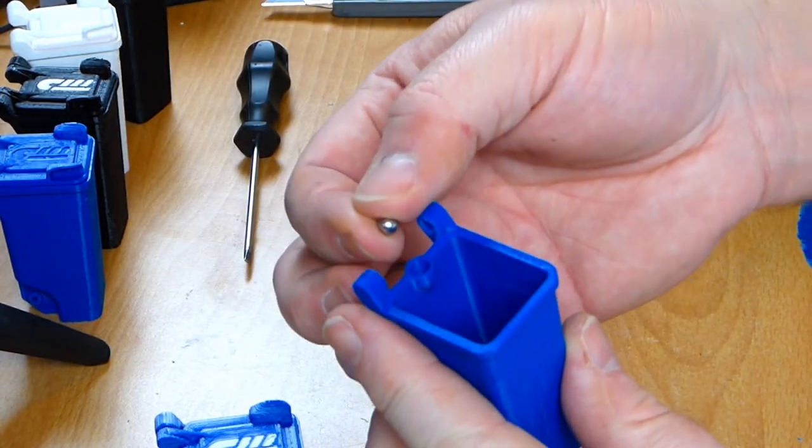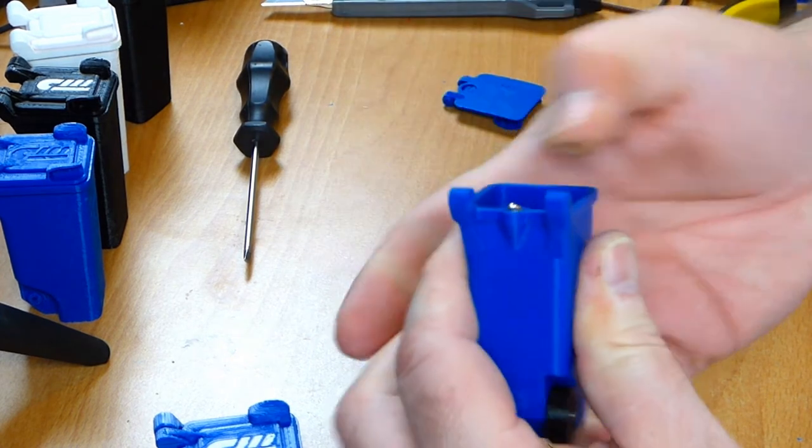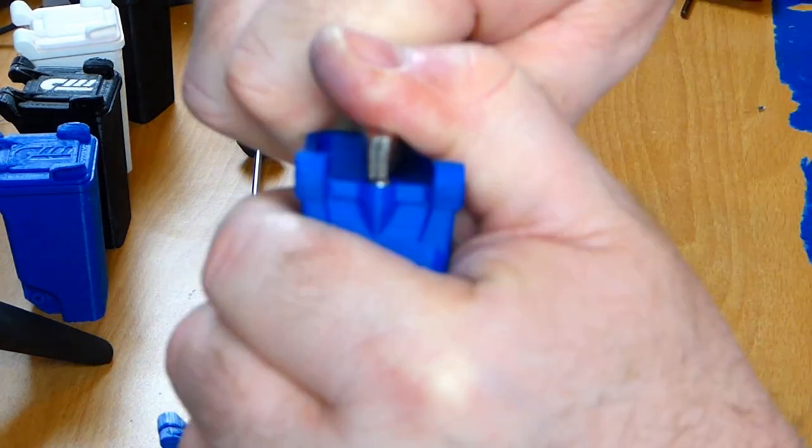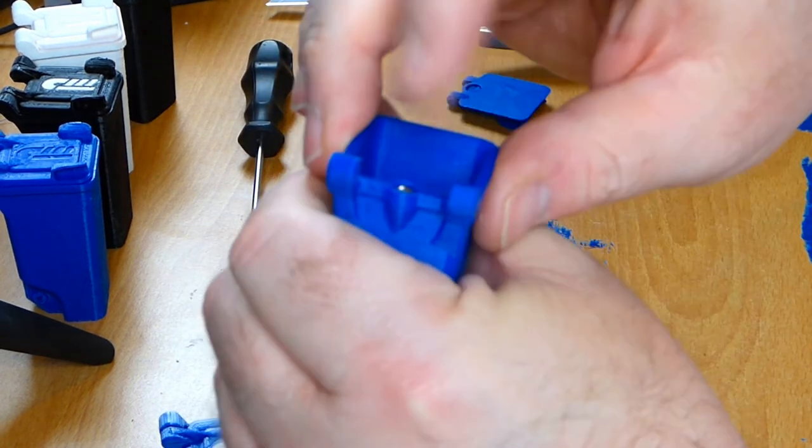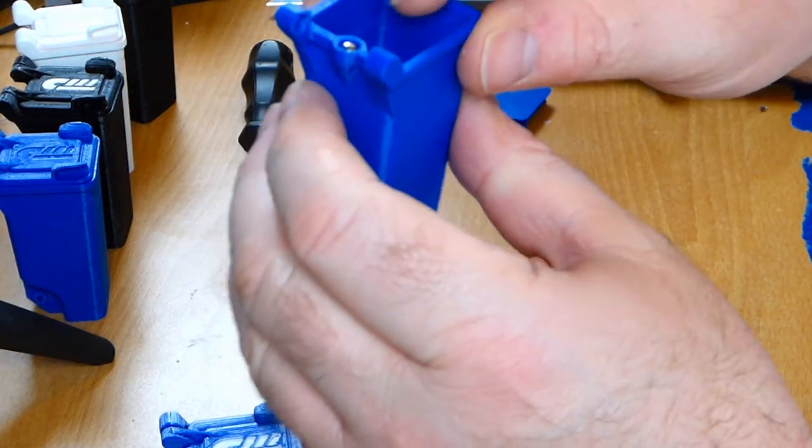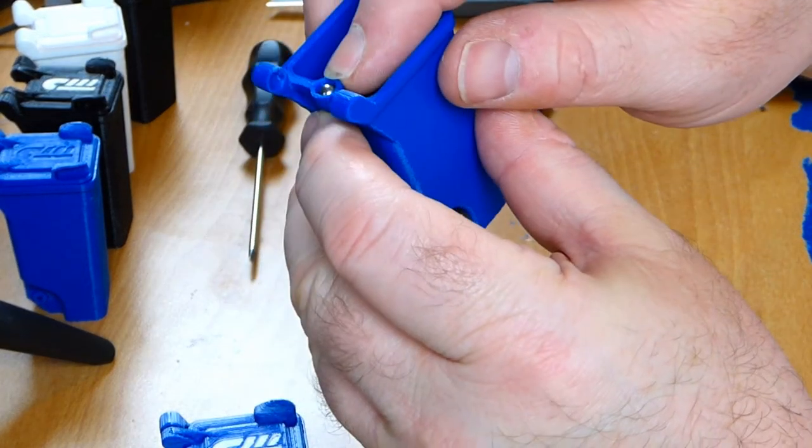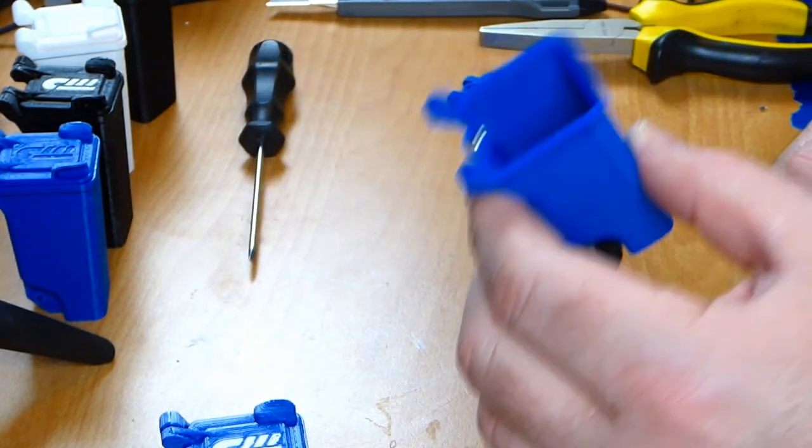And now for the big moment. Click. Like I said there's a ridge in there that will keep the magnet from ever falling out. If I wanted to remove this magnet now, I'd have to destroy this container. There's no other way to get it out.